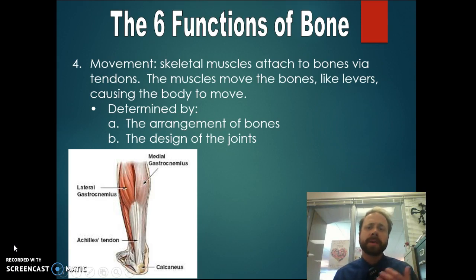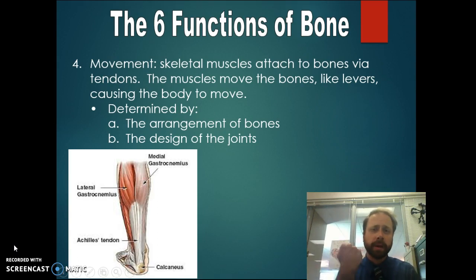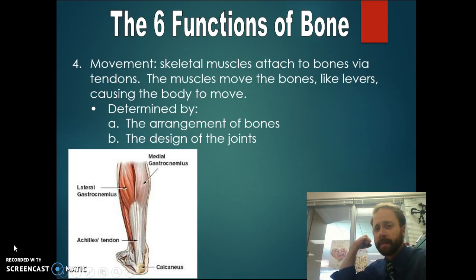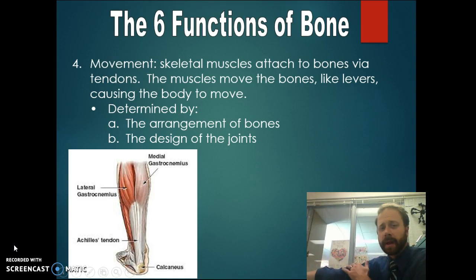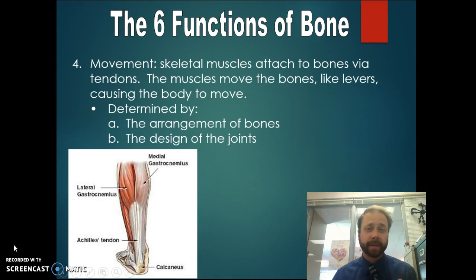Movement. Our bones give our muscles something to attach to, and they attach by the tendons. So you go from muscles to tendons to bones — the tendons are like the middleman. The bones and muscles move like levers: when the muscle contracts, it pulls the bone forward. So when I contract here, it pulls this forward, while the muscle below relaxes. If I need to go the opposite direction, the other one contracts and this one relaxes. How the bones are arranged determines how the body moves, and different types of joints allow different types of movement.